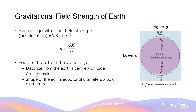On Earth, this value is affected by three things mainly: the distance from the Earth's centre (which can also be interpreted as altitude), the crust density, and the shape of the Earth — recalling that the Earth is not a completely perfect sphere. It is slightly elliptical, whereby the radius at the North Pole and South Pole are slightly shorter than the radii across the equator. As an object is moved further away from the Earth's surface or the Earth's centre, the value of g will quickly decrease as the value of r increases, since g is inversely proportional to the square of the radius.